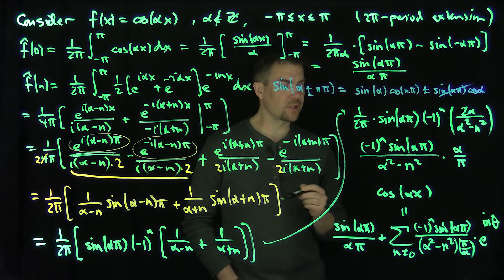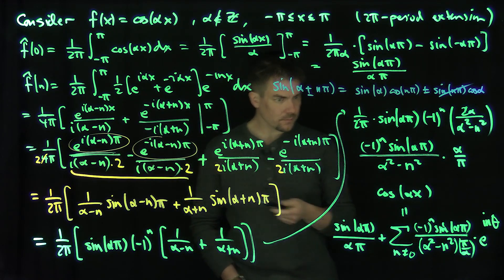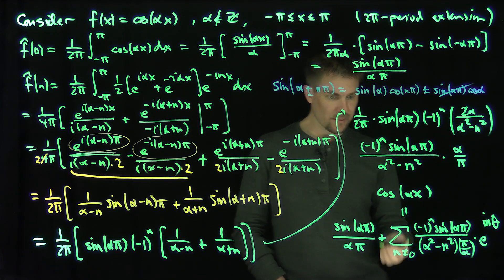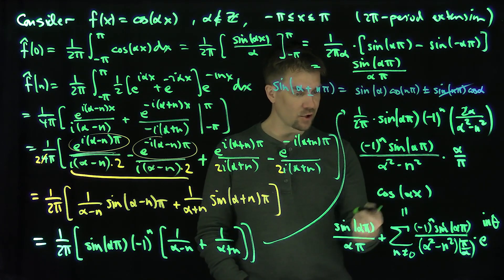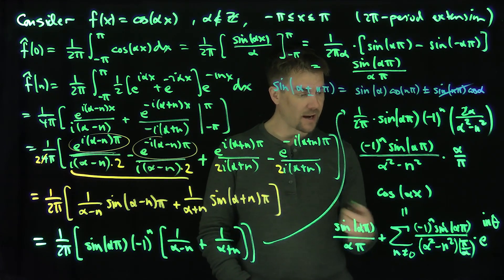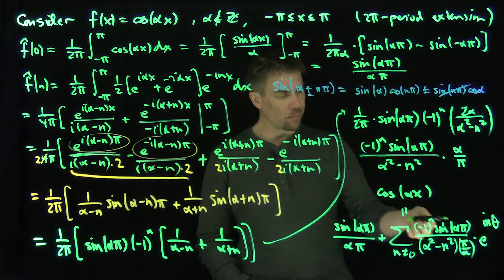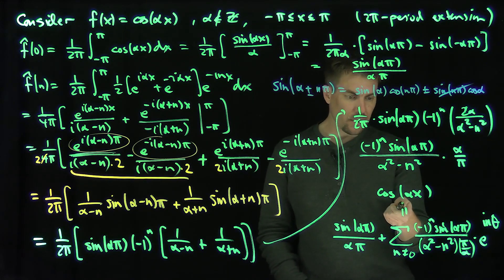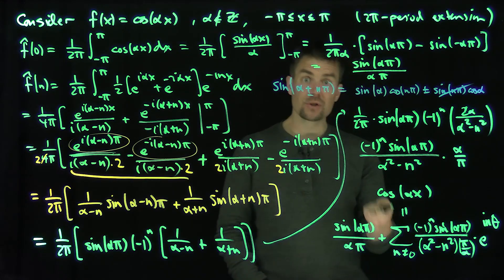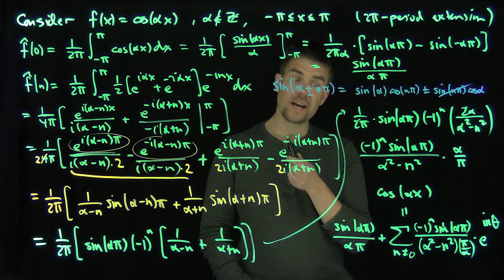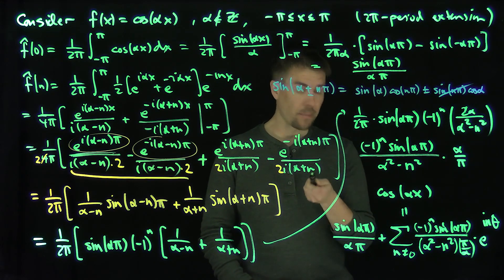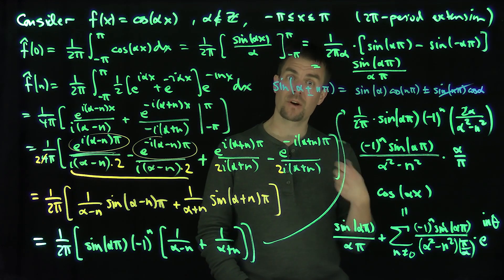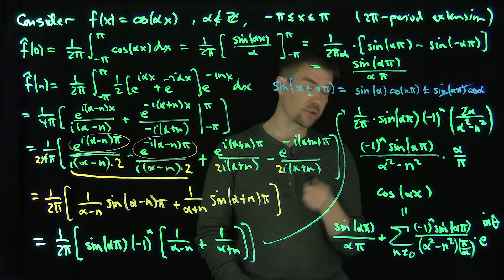This is our Fourier representation for cos(αx). In further videos, I'm going to plug in a particular value for θ to write down an expansion for the cotangent of any given number, and that will allow us to find values of the Riemann zeta function using this formula.